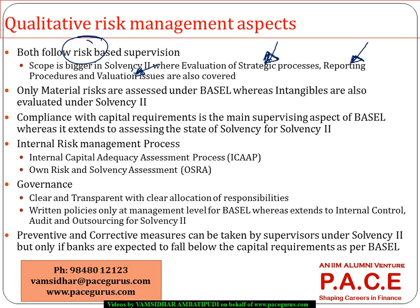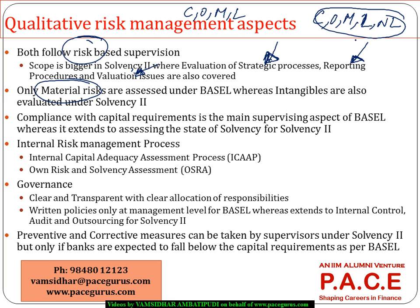When it comes to Basel, all material risks — credit, operations, market, liquidity — are assessed. In Solvency 2, we also see credit, operations, market, life, and non-life material risks addressed. Apart from those, even intangibles and non-material related risks are also addressed and capital requirements are derived under Solvency 2 norms. When looking at Basel, the major intention of reviews is to ensure that the company is compliant with capital requirements — whether Tier 1 capital or total capital ratio — whereas checking the state of solvency of the insurance company also forms an important responsibility of the supervisory process under Solvency 2.